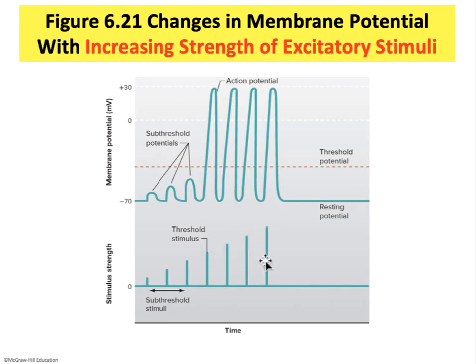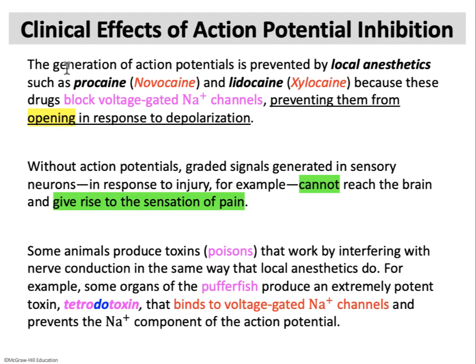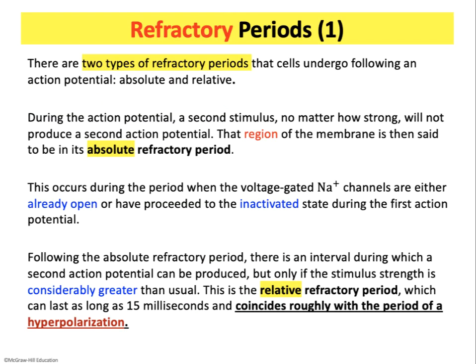This slide discusses anesthetics and how they prevent passage of information along neurons to the brain — so the brain is unaware of what's happening when a dentist works on your tooth. Novocaine and xylocaine are chemicals used to block voltage-gated sodium channels. Poisons can act similarly — the puffer fish produces tetrodotoxin, which prevents voltage-gated sodium channels from functioning by binding to them.